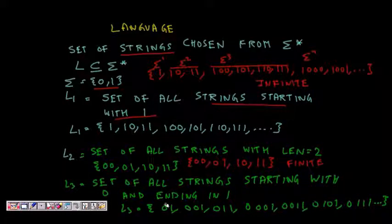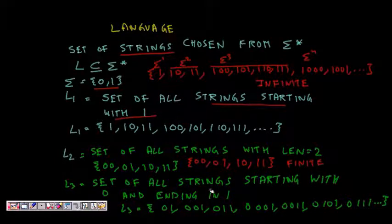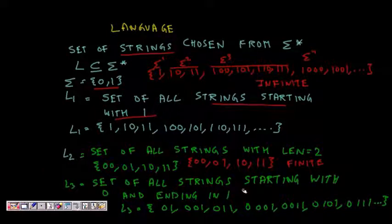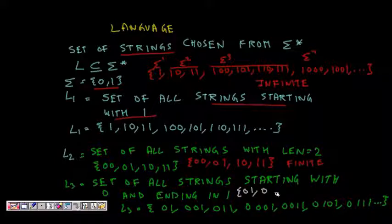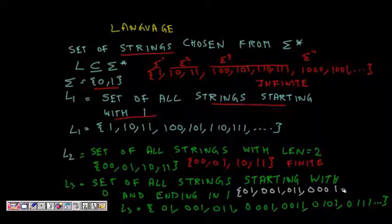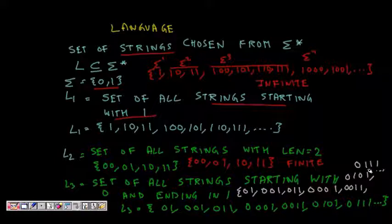A third language, L3, is the set of all strings that start with 0 and end with 1. The smallest such string is '01'. Others include 001, 011, 0001, 0011, 0101, 0111, and so on. This is also an infinite language.